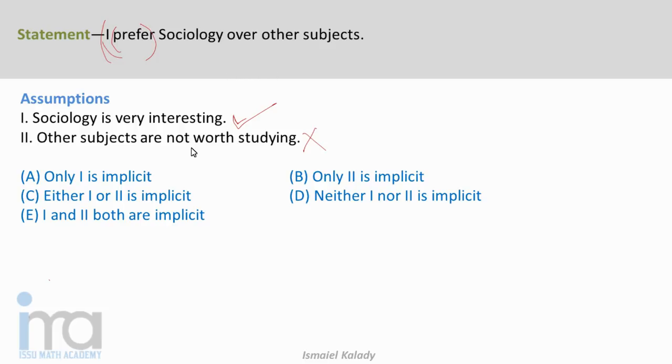Sociology is very interesting. Only one is implicit. This is our right answer because only there are two assumptions. In this way we approach the questions that will be made. This is our right answer.